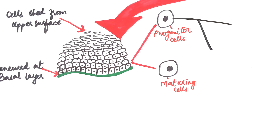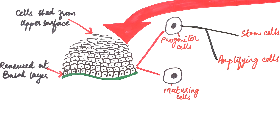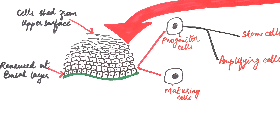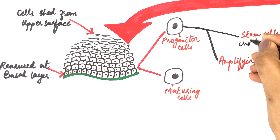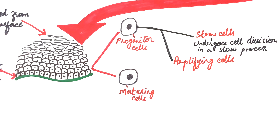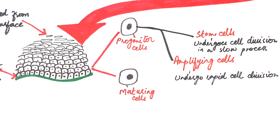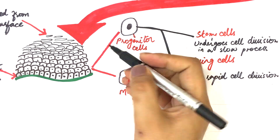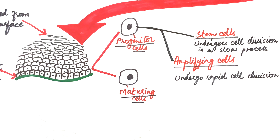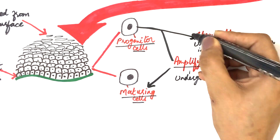The progenitor cells are further divided into stem cells and amplifying cells. The stem cells undergo mitotic cell division in a slow process, and their main function is to maintain the proliferative potential of the epithelial tissue. The amplifying cells undergo a rapid cycle of mitotic cell division, and their main function is to provide a large number of cells for maturation. The amplifying cells of the progenitor population enter into the maturation phase and become the maturing cells.